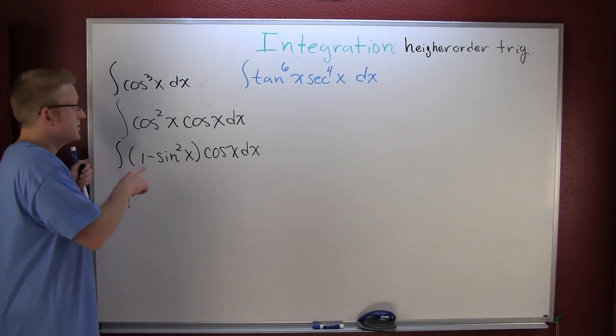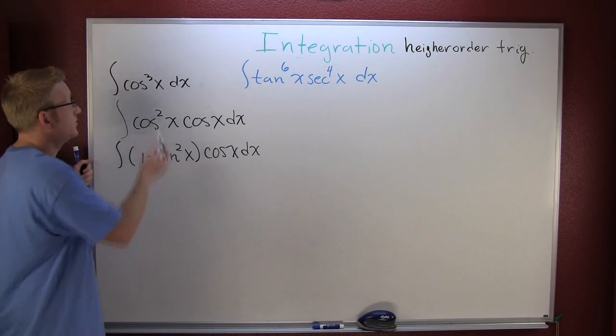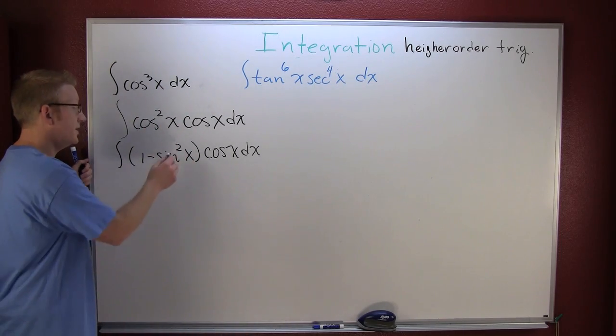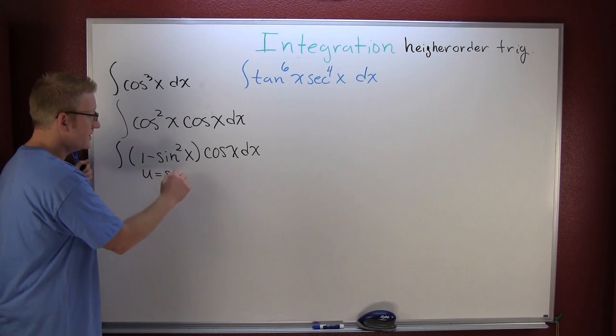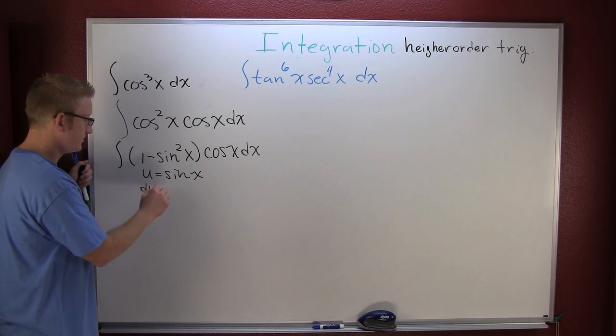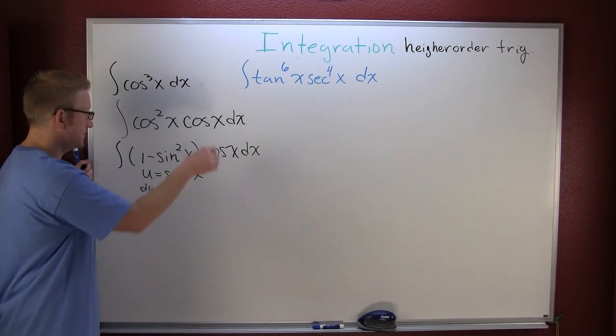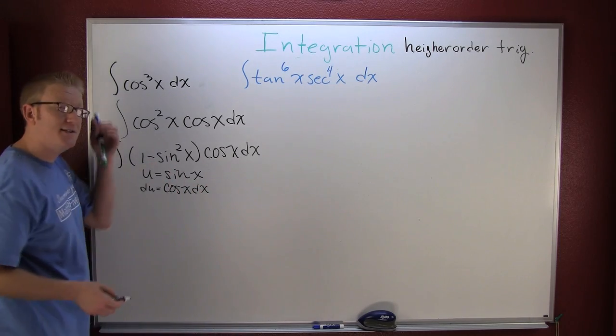Alright, so let's take it further. Let's go more. We wanted a u du situation. Originally we were trying to produce a sine, but here now look at this. Here I'm going to let u equal the sine of x. Now what's du? Yes, the cosine of x dx.